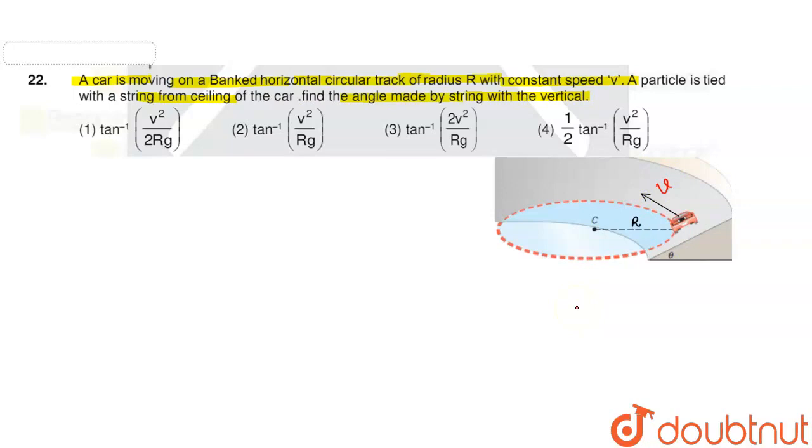This circular track has radius R. Now, to find the angle with the vertical, I will assume this is the ceiling and here is the vertical. When the circular track moves, the particle with mass m hangs here. The weight of this particle is mg in the downward direction.